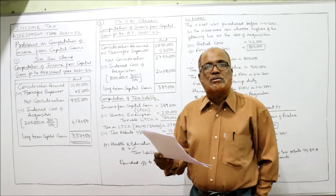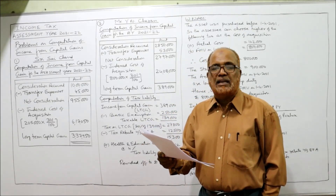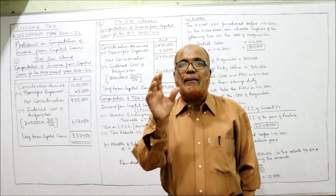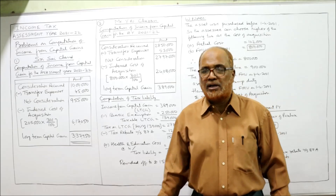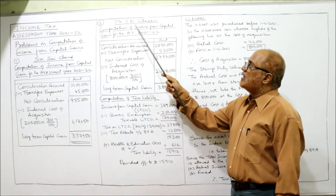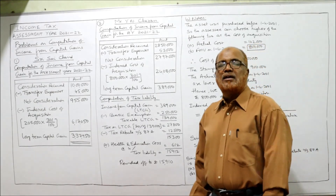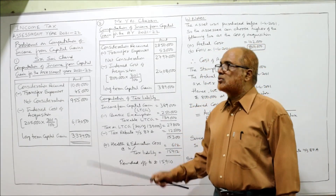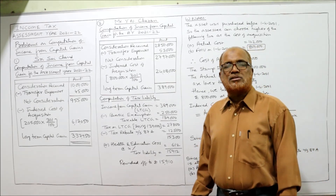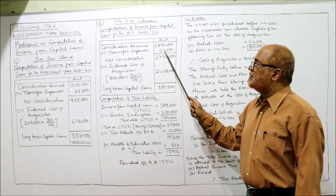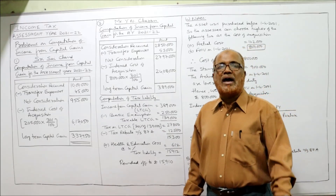Transfer expenses are 53,000. We are required to compute income from capital gain and tax liability, assuming income under other heads is nil. Mr. Y.L. Charn — computation of income from capital gain for assessment year 21-22. Consideration received: rupees 28,50,000. Deduct transfer expenses 53,000, giving net consideration of rupees 27,97,000. From this we deduct indexed cost of acquisition.